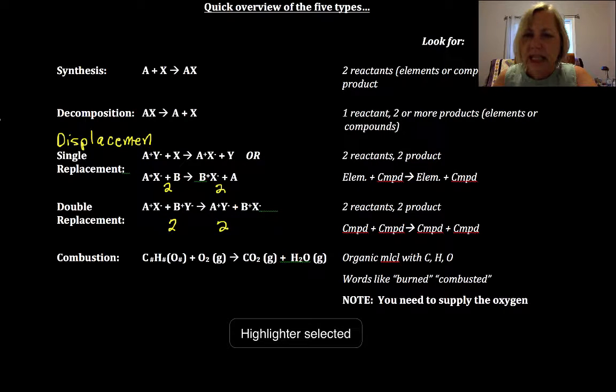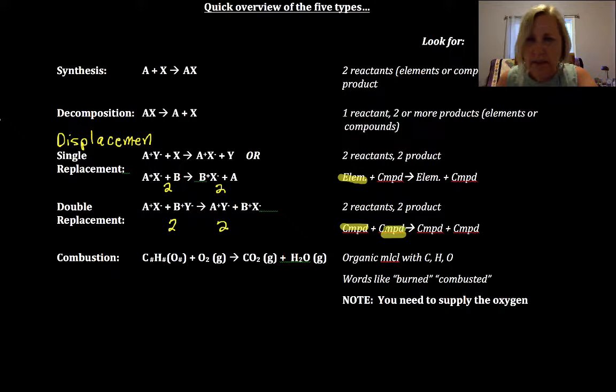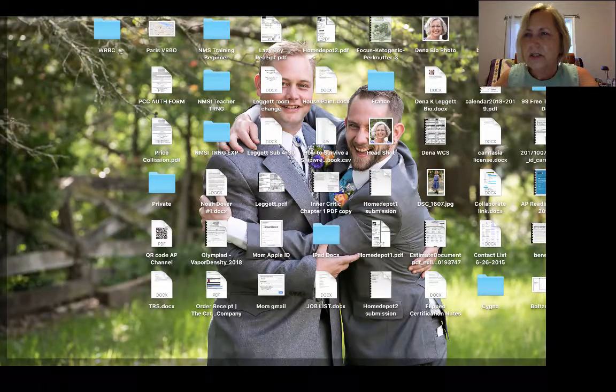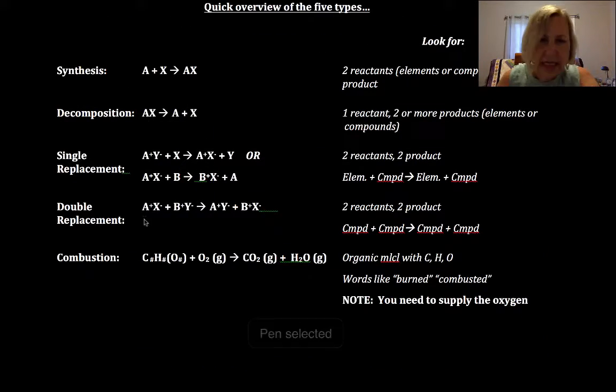Remember, the single replacement had elements with compounds. Here we've got compounds and compounds. So this is like dancing on the dance floor. In this case, here's me and my husband, and here's Denzel and his wife, and we're going to trade partners. It's often helpful to put the charges below or above—just make sure you erase it in your final answer. It helps to put the charges so you know the negatives are going to trade places with negatives. We're not going to end up with positives with positives or negatives with negatives in the end. Opposites attract in chemistry.